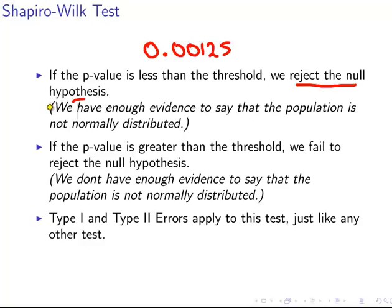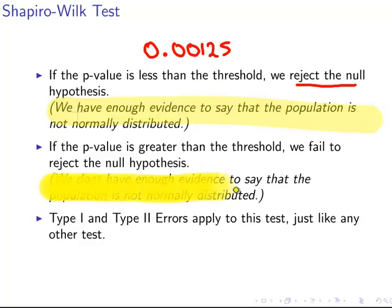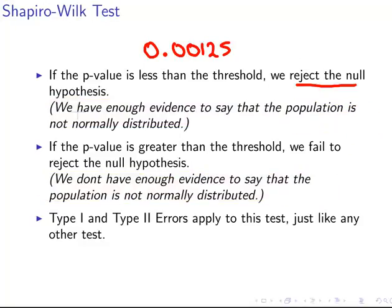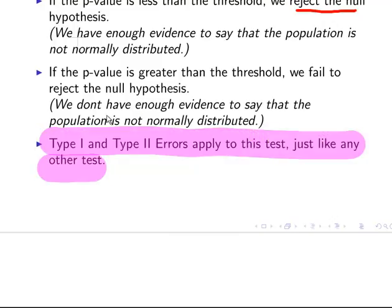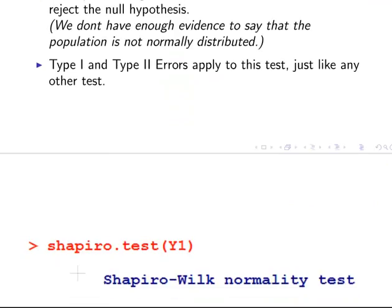Failing to reject means we don't have enough evidence to say the dataset is not normally distributed. A simplistic view would be to say 'data is normally distributed yes or no,' but a more nuanced approach is better. We either have enough evidence to say the dataset is not normally distributed, or we don't — because these are tests against normality. Also, type 1 and type 2 errors apply to this test like any other hypothesis test, so be mindful of that when interpreting results.